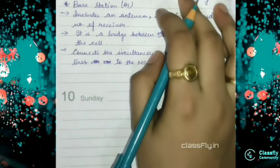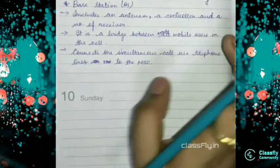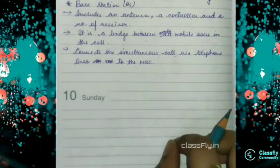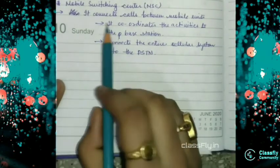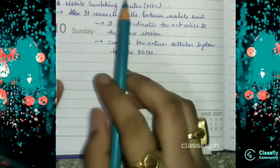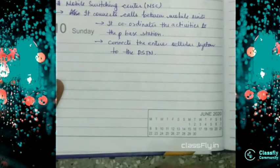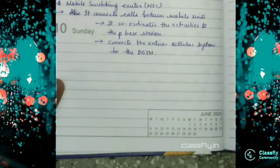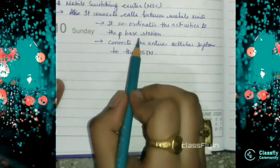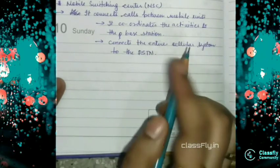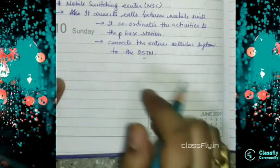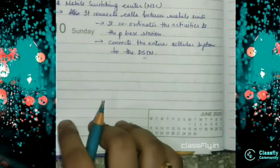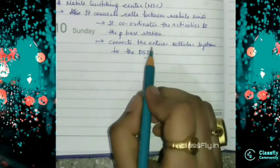Now from MS that is the mobile station it will move to BS. And from BS it will move to MSC. So as I told from base station it will move to the mobile switching center. What does mobile switching center do? It connects the calls between the mobile units. That means if I call someone it will connect my call to that person's mobile phone. And it also coordinates the working and the activities of the base station. And then it connects the entire cellular system to the PSTN.